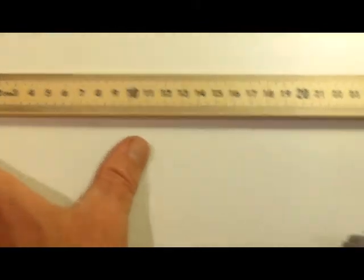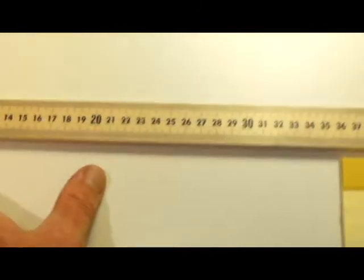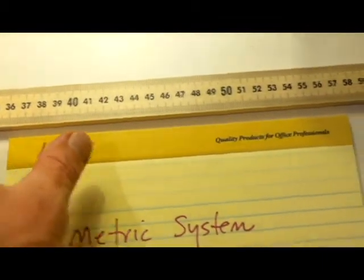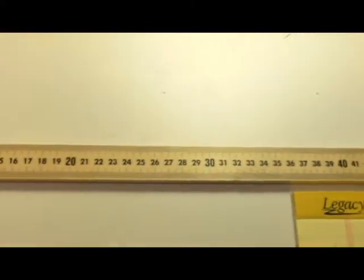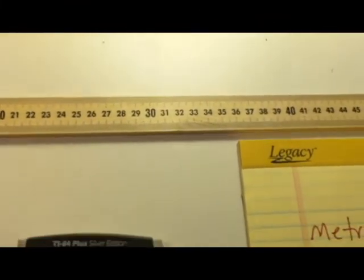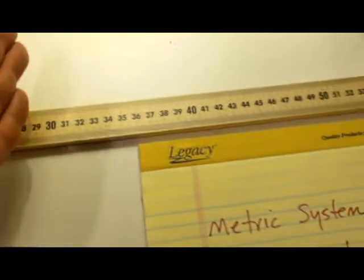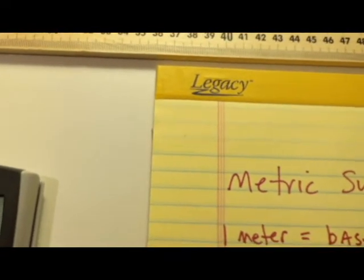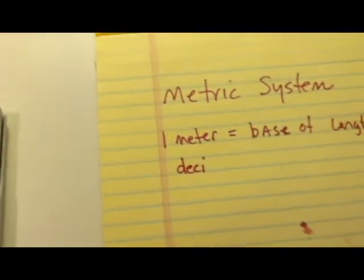Now you can kind of see that this meter stick is in groups of ten. So there's ten of these groups in one meter stick. If we could divide this meter stick into ten groups, each one of these then would be called a decimeter. That's the prefix we use, a decimeter.